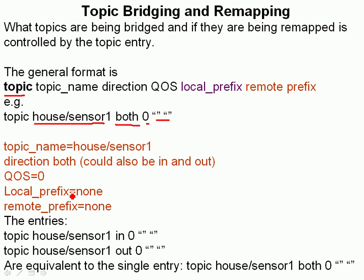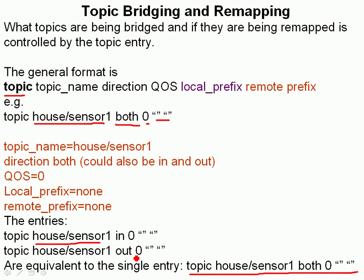Here's a breakdown of what the entries mean. Example: 'topic house/sensor1 in 0' with no local and no remote prefix. And again: 'topic house/sensor1 out 0' with no local and no remote prefix. That is equivalent to a single entry using 'both'. Personally I prefer using 'in' and 'out' separately rather than 'both', because it's a bit clearer.